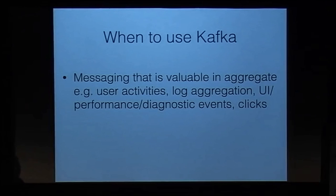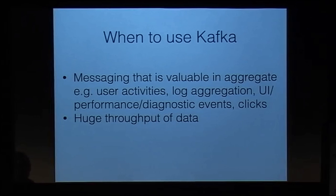When would you use Kafka? When you've got messaging that is valuable in aggregate. So things like user activities, log aggregation, UI performance, diagnostic events, clicks. The more data you have, the less you generally care about any individual bit of it. So some message loss is acceptable. You'd use it when there's a huge throughput of data. If you're looking at hundreds of thousands or millions of messages per second, you should probably be looking at this first. Or if you're trying to implement CQRS. CQRS is a service style, I suppose, that allows you to have replays.